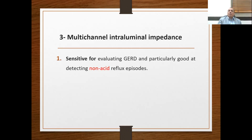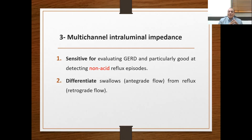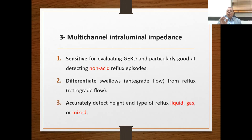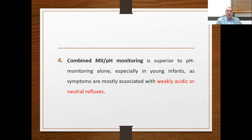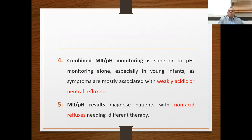The third and very important investigation is multi-channel intraluminal impedance, which is very sensitive for evaluating GERD in children — particularly good at detecting non-acid reflux. It differentiates between antegrade and retrograde (reflux) flow, accurately detects the height and type of reflux (liquid, gas, or mixed), and determines whether reflux reaches the lower, middle, or upper esophagus. Combined multi-luminal impedance with pH monitoring is now superior to pH monitoring alone, especially in young infants whose symptoms are mostly due to weakly acidic or neutral refluxes. This is important in treatment, as non-acid reflux patients require different treatment.